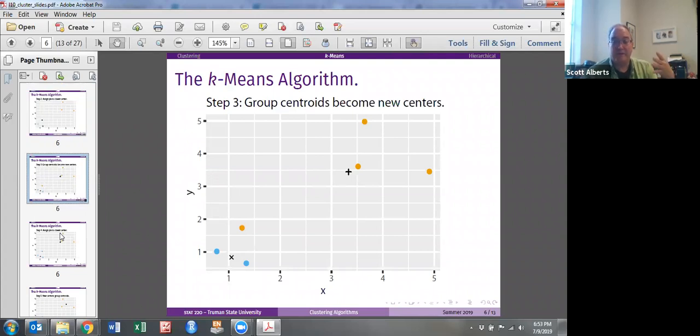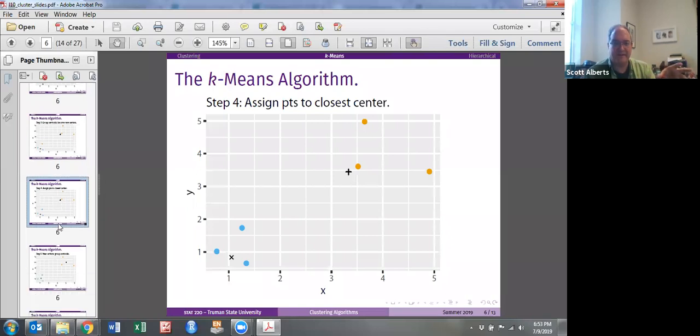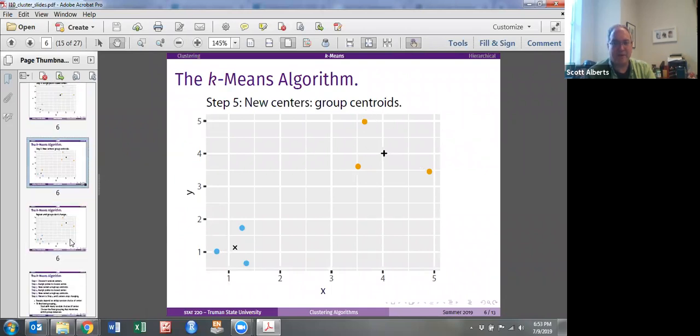Then what we do is now that we've moved our cluster, we now reassign our points. So now this point right here, I think it was point two, we've now moved from the yellow cluster into the blue cluster because it's closer to the blue centroid than it was to the yellow centroid. So we've now assigned the points to the closest center and we now repeat. We move to the mean of these three points and the mean of these three points. And what we would find is the groups don't change because we've now hit the centroid where the groups are sort of naturally in the clusters they have.